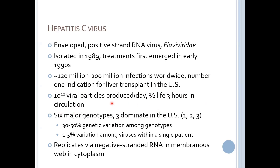There are six major genotypes, so there's viral diversity just like we saw for flu, three of which dominate in the US. There's quite a lot of genetic variation among the genotypes and a reasonable amount of variation among viruses within a single patient — up to 5% genetic variation, which is really quite high. Even though it's positive-stranded, it replicates via its negative-strand RNA in a membranous web in the cytoplasm, which is a relatively unique structure that is only seen in HCV.